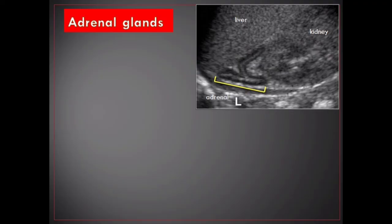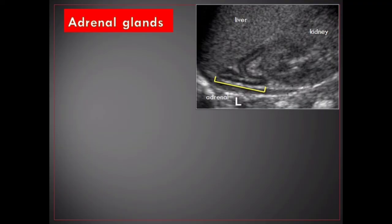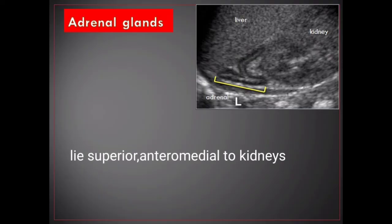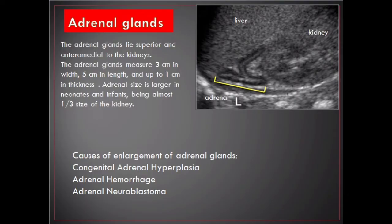Adrenal glands. The adrenals are paired organs of the endocrine system, often asymmetric in shape. The right adrenal gland is pyramidal in shape whereas the left is semilunar or crescent-shaped and somewhat larger. Each is enclosed in the perirenal fascia and has a body, a medial limb, and a lateral limb. The adrenal glands lie superior and medial to the kidneys. They measure 3 centimeters in width, 5 centimeters in length, and up to 1 centimeter in thickness. Proportionally, adrenal size is larger in neonates and infants, being almost one-third the size of the kidneys. Some causes of adrenal enlargement include congenital adrenal hyperplasia, adrenal hemorrhage, and adrenal neuroblastoma.